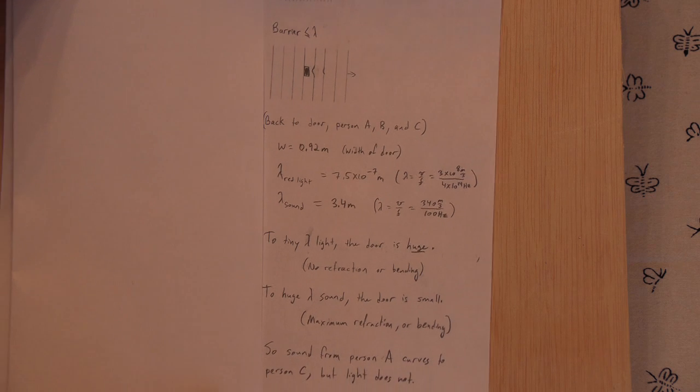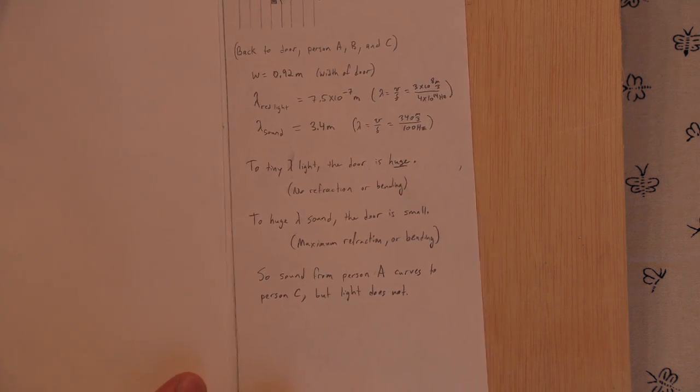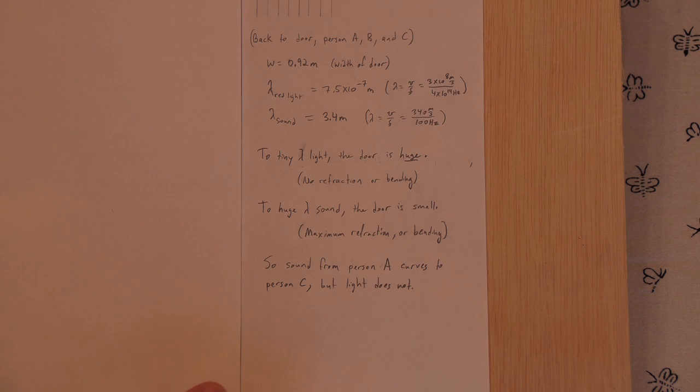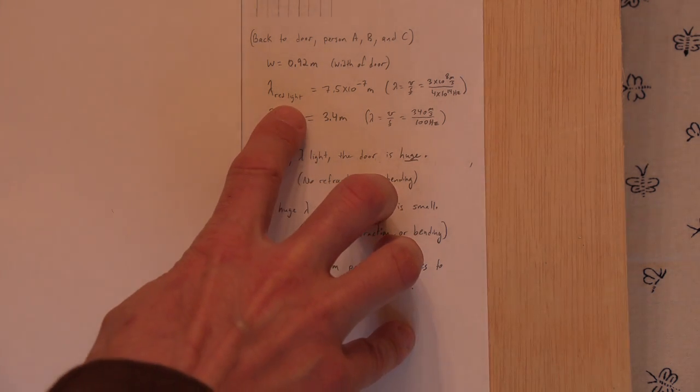So we go back to the person, the doorway example that I gave in people A, B, and C. So if you look at the width of the door, a three foot width door is about, which is standard three feet is about 0.92 meters. That's the width of the door.